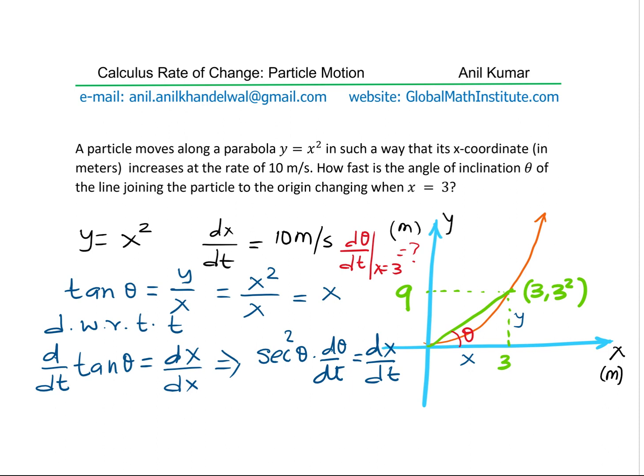So from here, we can find what d theta dt is. And so we can write d theta dt, the rate of change of angle is basically equal to 1 over secant square theta times dx dt.